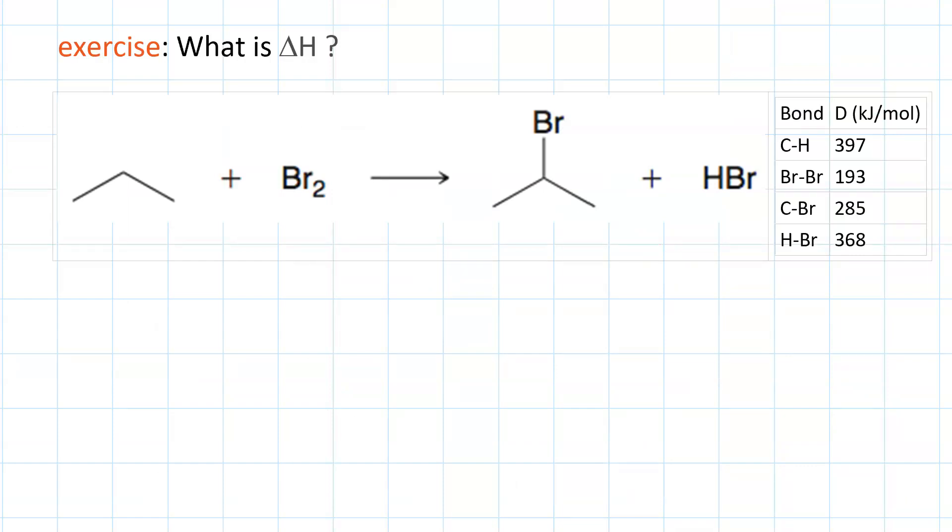Here's an exercise to try. Figure out ΔH for this reaction: propane plus Br₂ yields 2-bromopropane plus HBr. Here are the bond dissociation enthalpies you'll need.